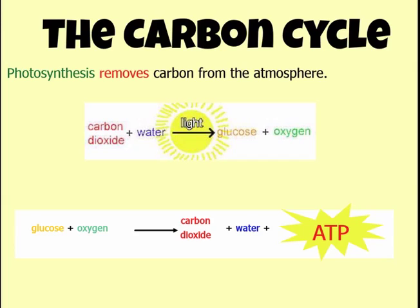Photosynthesis — what producers are doing — removes carbon in the form of carbon dioxide from the atmosphere. Carbon dioxide plus water, in the presence of light, is turned into glucose and oxygen. Remember that glucose is made of six carbon molecules, so we're taking carbon out of the air and turning it into a molecule of sugar.